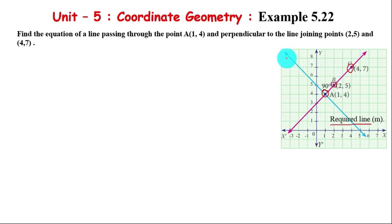The blue color line passes through the given point A. The red color line passes through the two given points B(2,5) and C(4,7). These are x1, y1 and x2, y2.